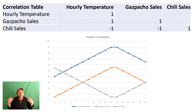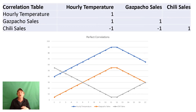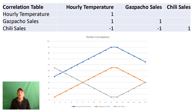All right, here we have our information. If we look up there, we've got our correlation table, and of course the hourly temperature is going to have a perfect positive correlation of one because it is itself. Then the gazpacho has a perfect correlation of one with the hourly temperature because as the temperature rises, the amount of sales of cold soup also rises.